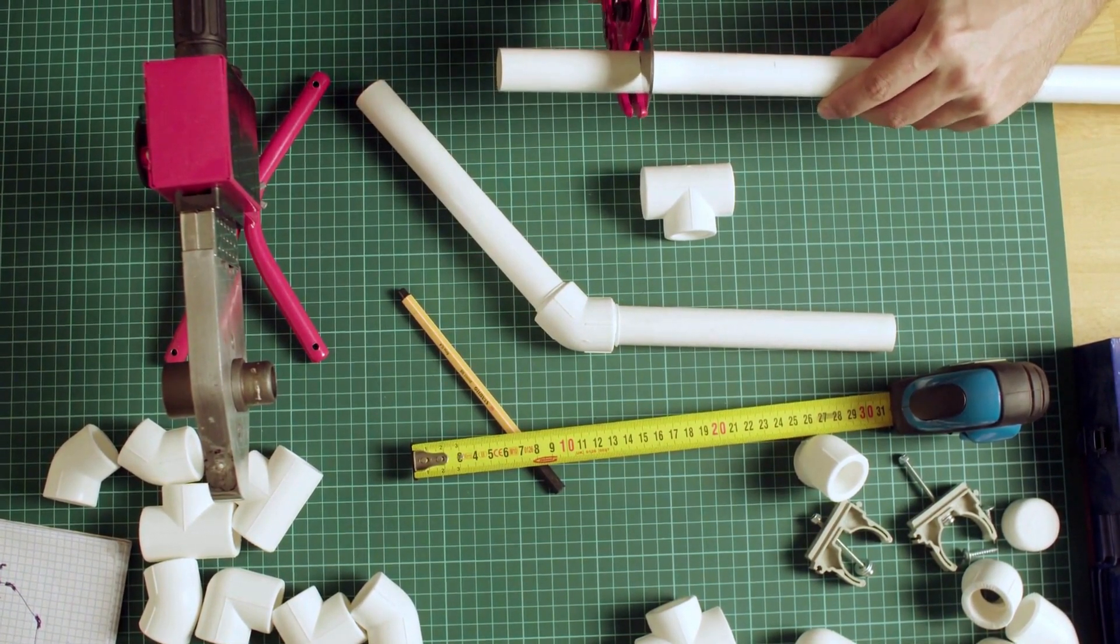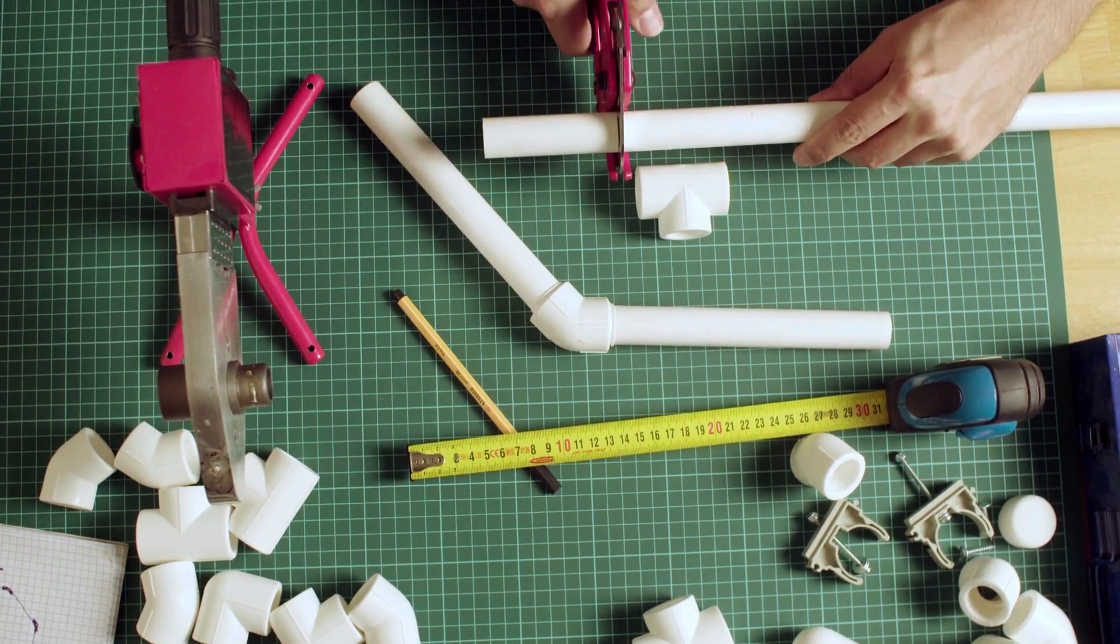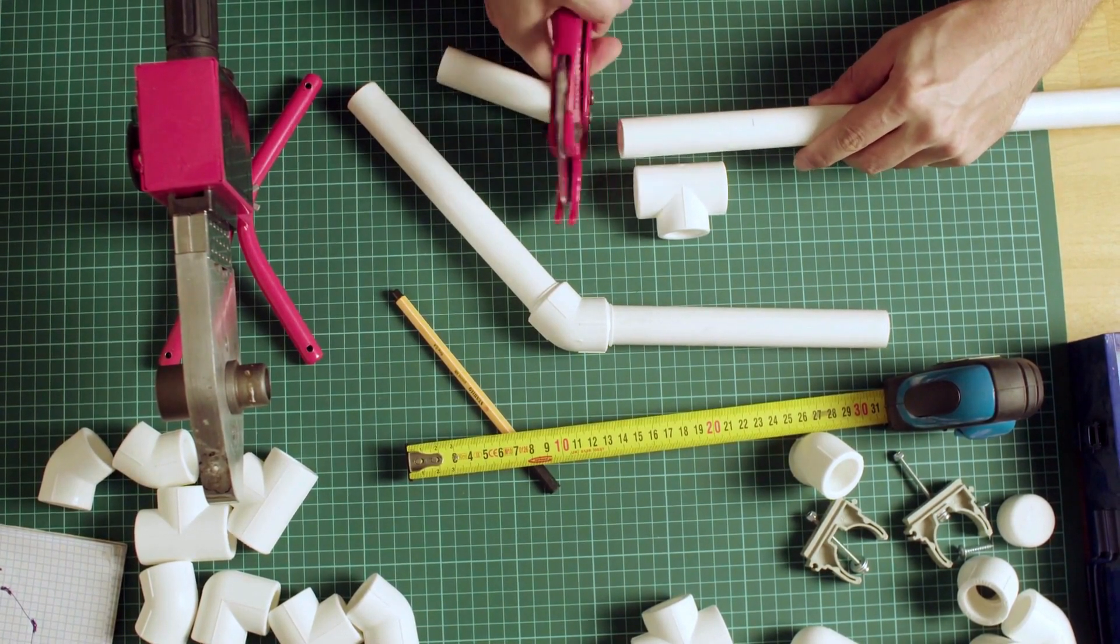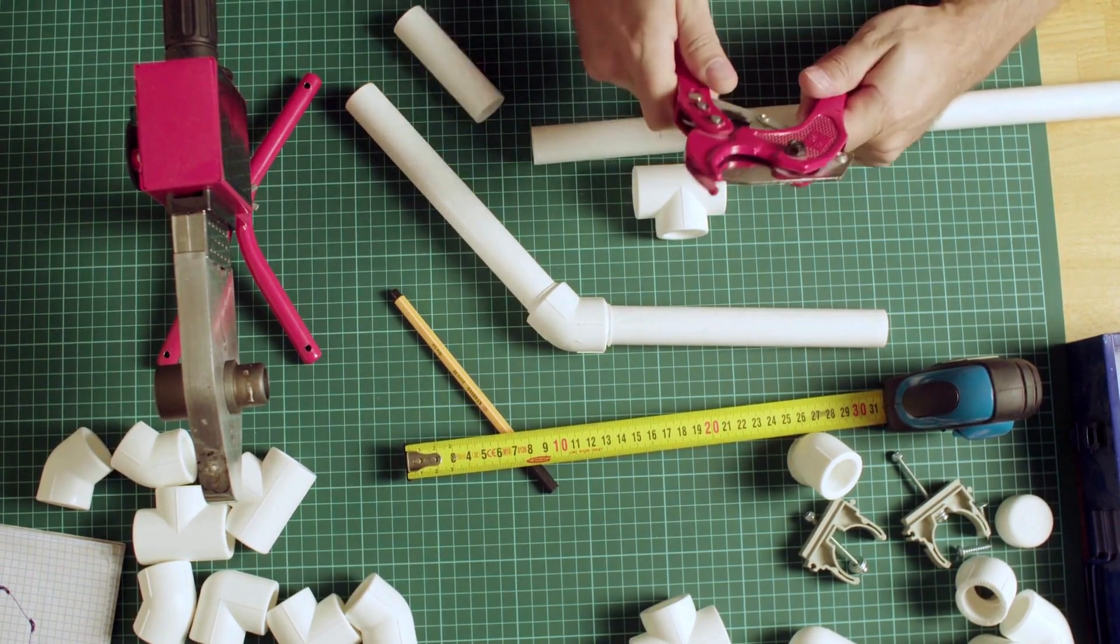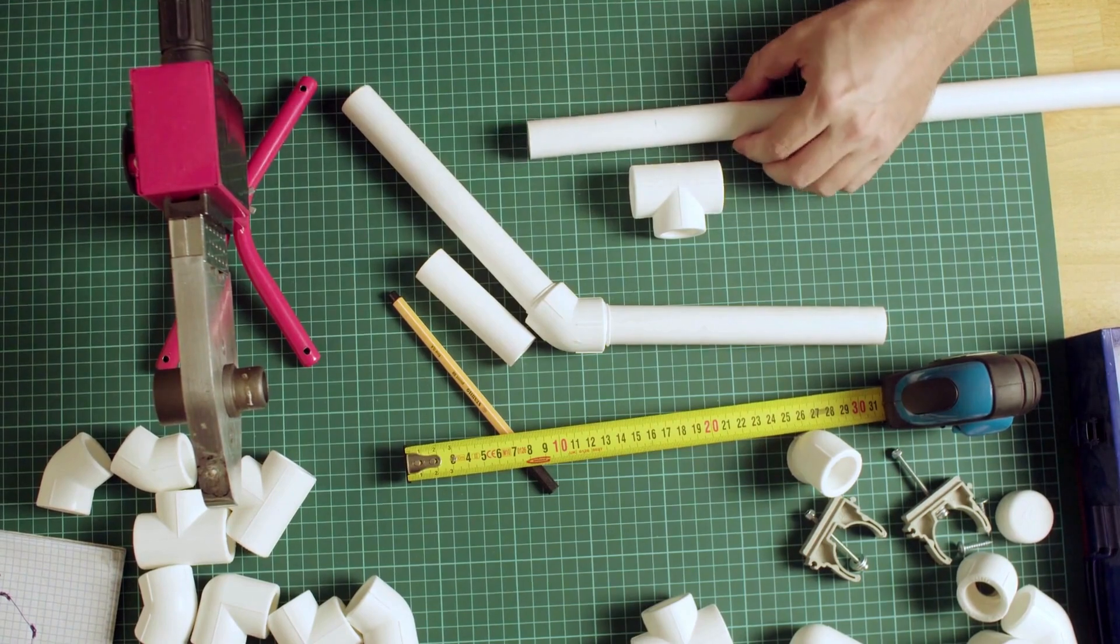Before we dive into the measurement process, let's cover some important information. You'll only need about half an hour for this simple project, and the tools required are a soft measuring tape, a caliper, and a calculator. Of course, don't forget to have your pipe handy.